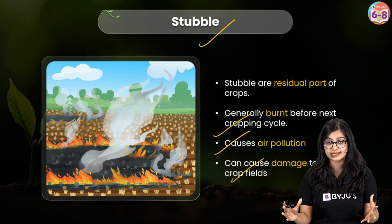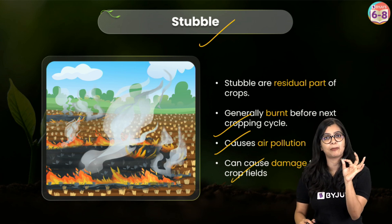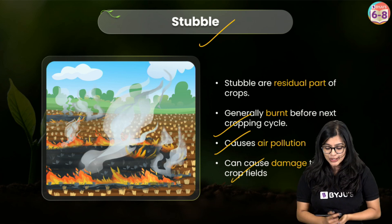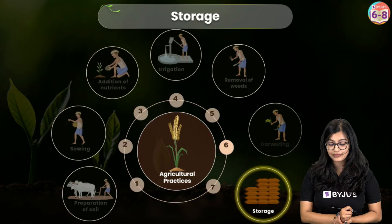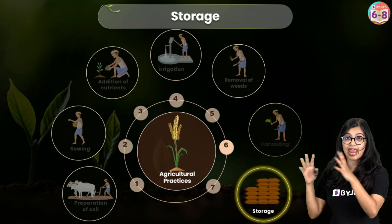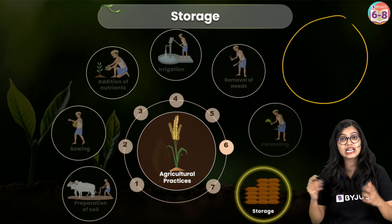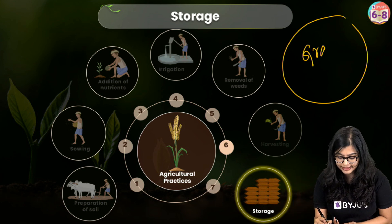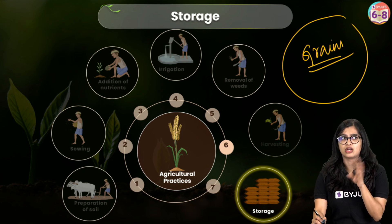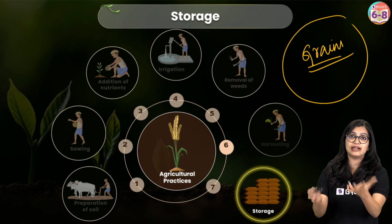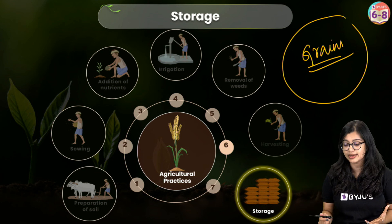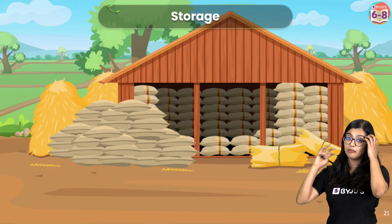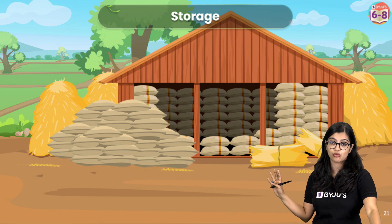After harvesting, we have a large amount of grains. There's only so much we can sell immediately, so we need to find an efficient way of storing it. Storage of grains is very important because after harvesting, grains are stored for future use. They can be stored in jute bags or metallic bins.